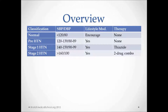No matter what the blood pressure is, you have to encourage the patient to modify his or her lifestyle. No therapy is needed for normal and prehypertension, but a thiazide-type diuretic can be used as a first line for stage 1 hypertension. For stage 2, a combination therapy can be used involving ACE inhibitors, beta blockers, calcium channel blockers, or thiazide-type diuretics.